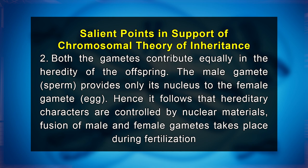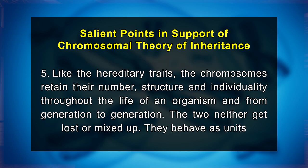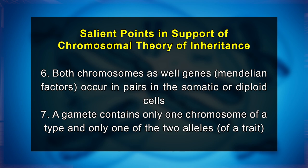Fusion of male and female gametes takes place during fertilization. The nucleus possesses chromosomes; hence chromosomes must carry the hereditary traits. Loss of a complete chromosome or part of a chromosome produces structural and functional deficiencies in the organism. Like hereditary traits, chromosomes retain their number, structure, and individuality throughout the life of an organism and from generation to generation — they neither get lost nor mixed up; they behave as units. Both chromosomes and genes, that is Mendelian factors, occur in pairs in the somatic or diploid cells.